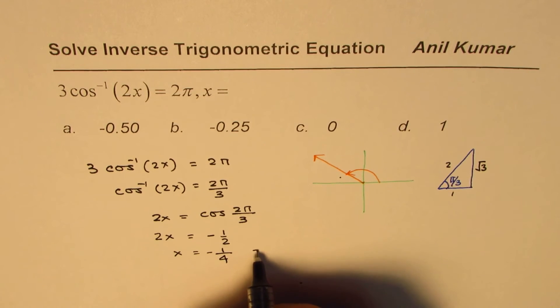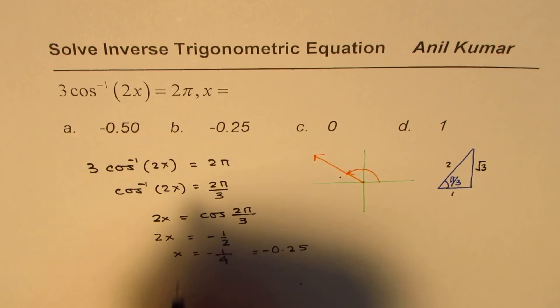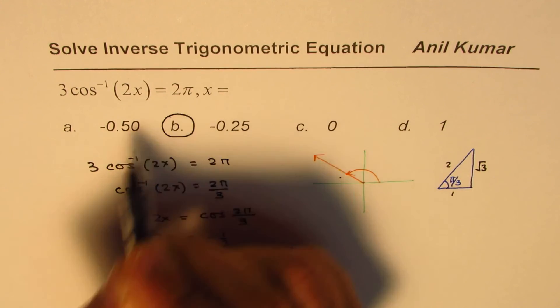So that is the right answer, which if you convert to decimals will be negative 0.25. So B is the right option.